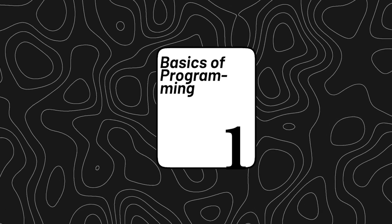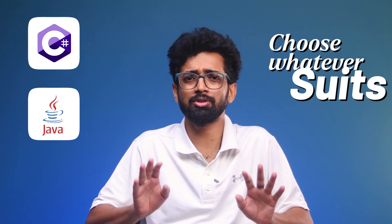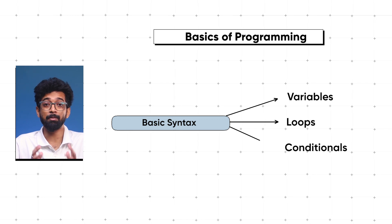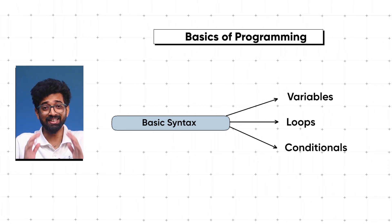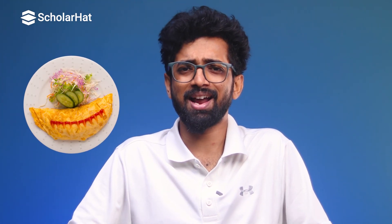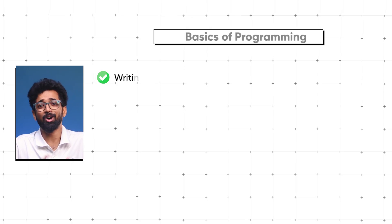When you work out, you do the warm-up first, right? So here are the basics for you. First of all, you need to choose a programming language — whether it's C#, Java, or C++. Choose whatever suits your style and get comfortable with the basic syntax, because you have to be able to handle variables, loops, and conditionals with ease.